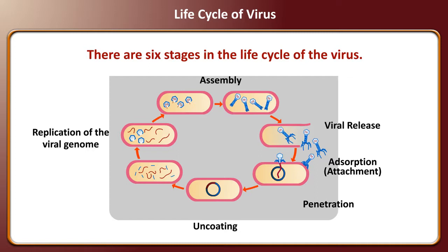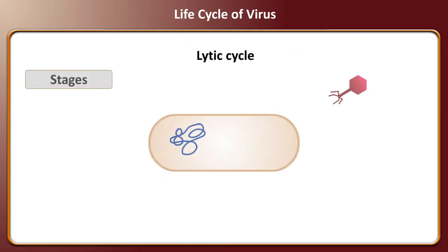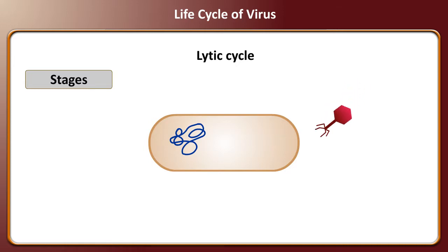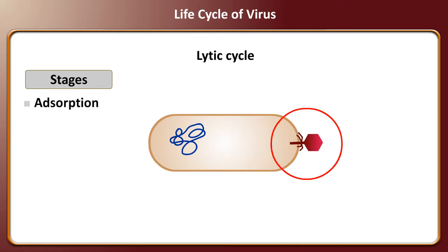The life cycle of a virus begins with adsorption or attachment, in which the virus attaches itself to the outer cell wall of the host. The next stage is penetration.